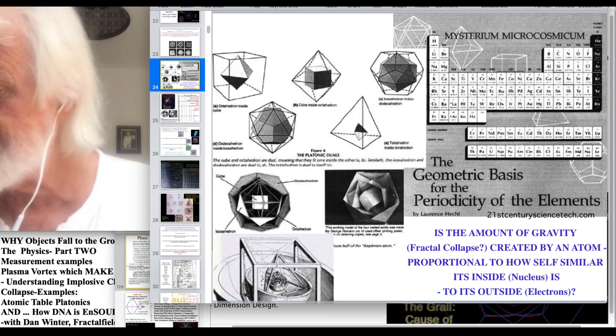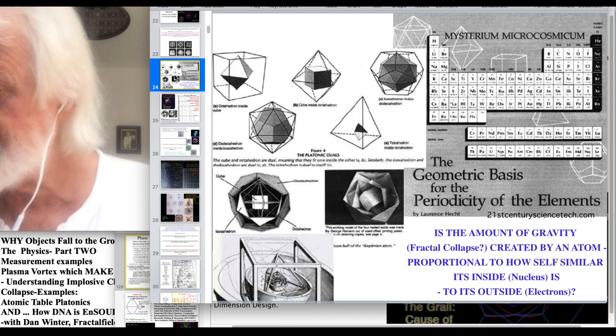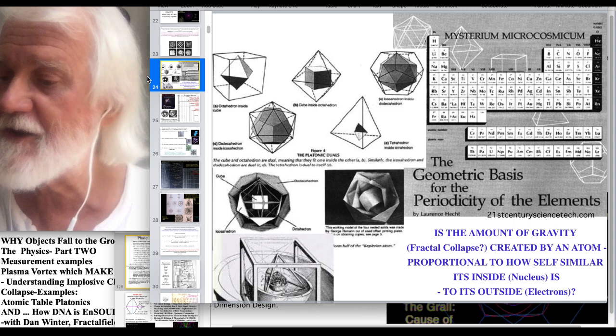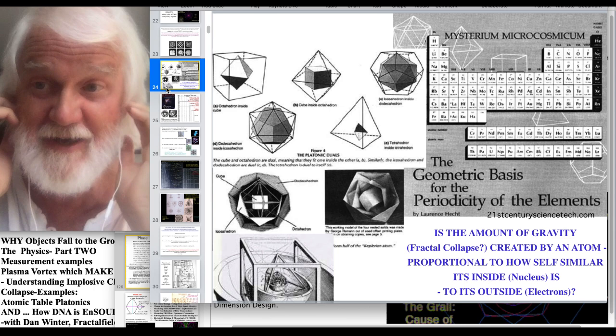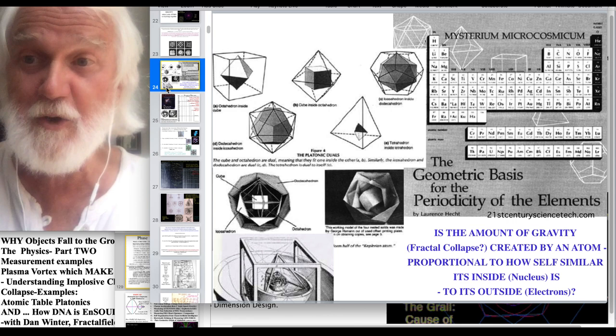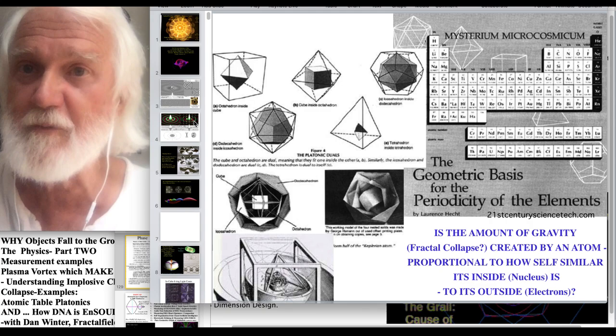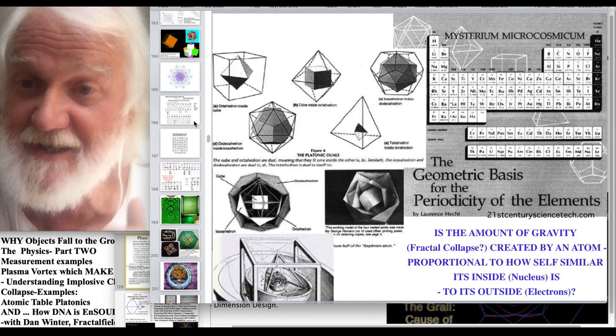Okay, end of section on atomic table visualizations. Next, how DNA creates implosive charge collapse and therefore a soul and therefore gravity. Valerie's friend saw her grandmother floating over the ground and she was making gravity in her bliss. We have, we have witnesses. I mean, this is, these are not just stories. So, if we know that DNA can make some gravity and we would like to know how, plus it'd be convenient to know how DNA makes a soul. So maybe we should look at the pictures.